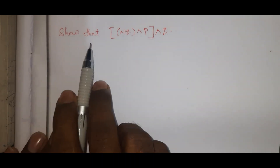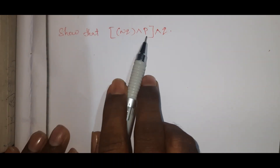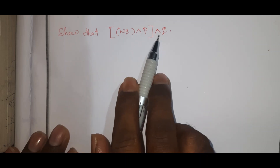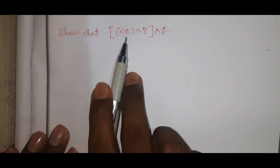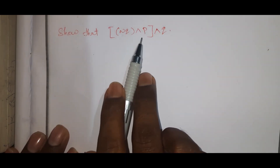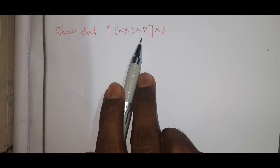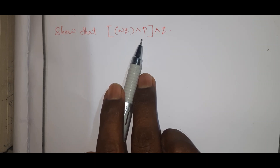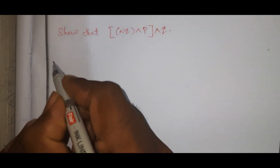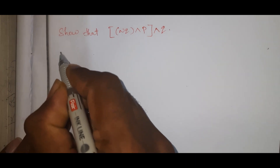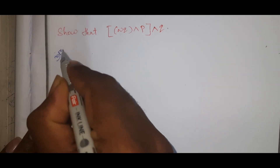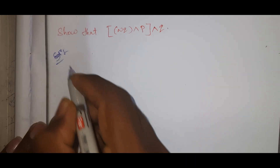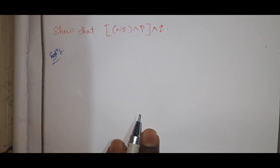Show that negation Q and P. What propositions are there? Only two propositions are there: P and Q. How many statements are there? Four statements are there. I will show you the first thing.